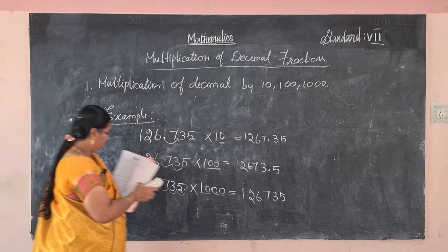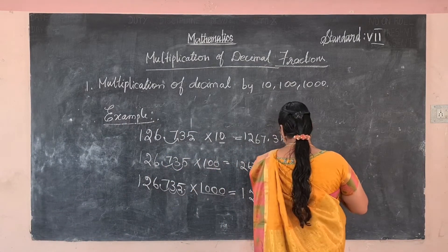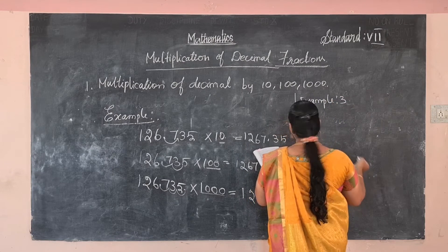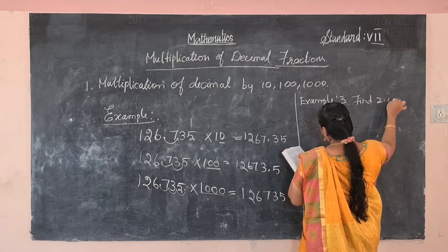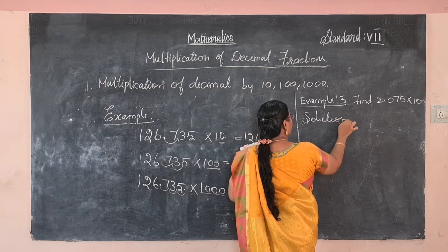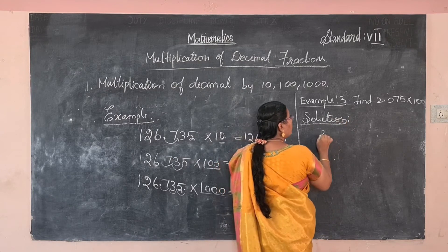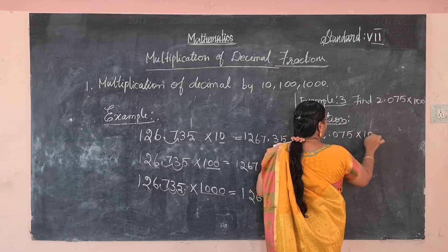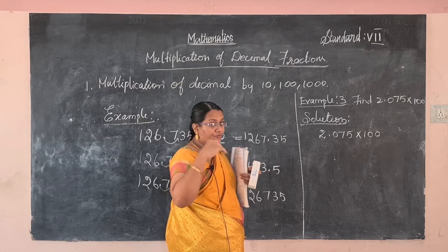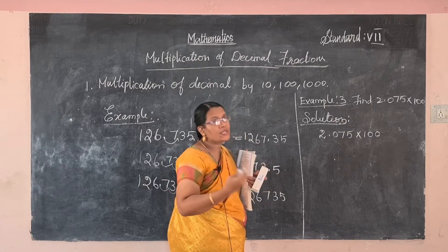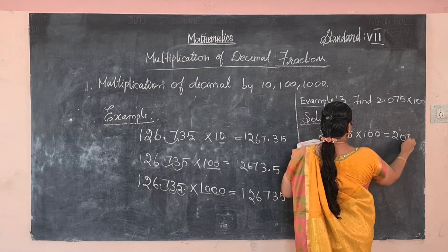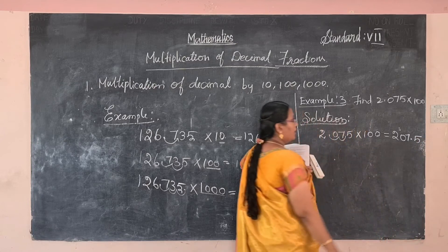Now see another example. Example 3: find 2.075 into 100. Multiplied by 100 — how many zeros? Two zeros. So the decimal point shifts to the right side by two decimal places: one, two. The answer is 207.5.